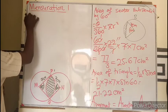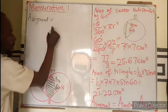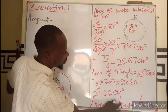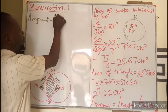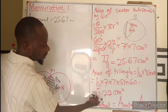Now we can subtract to get the value of the area of the segment. Our area of segment is going to be 25.67 minus 21.2, which gives us 4.47 cm².